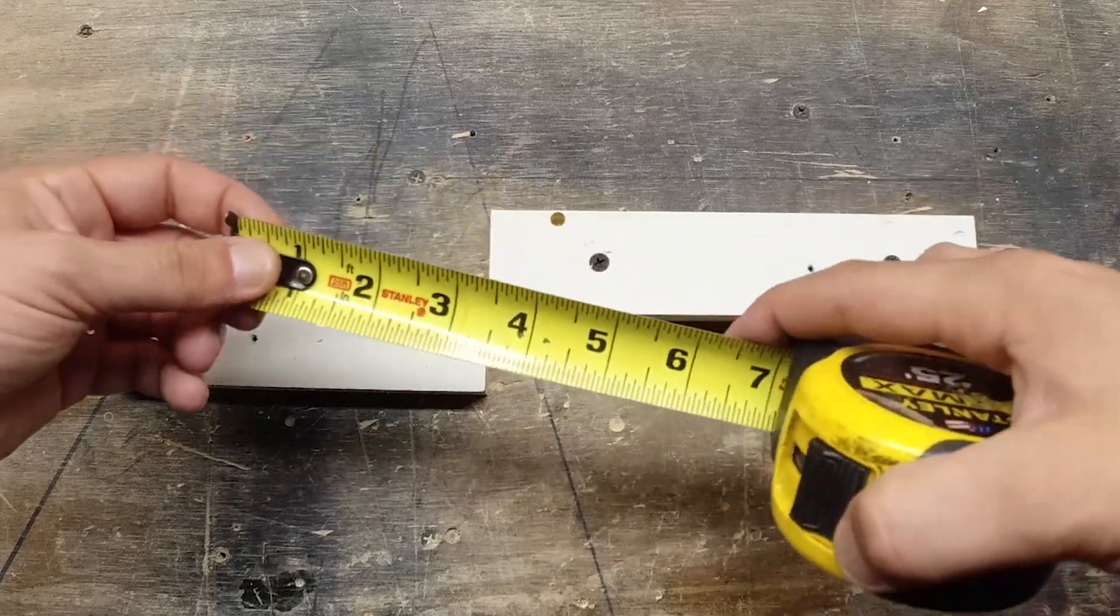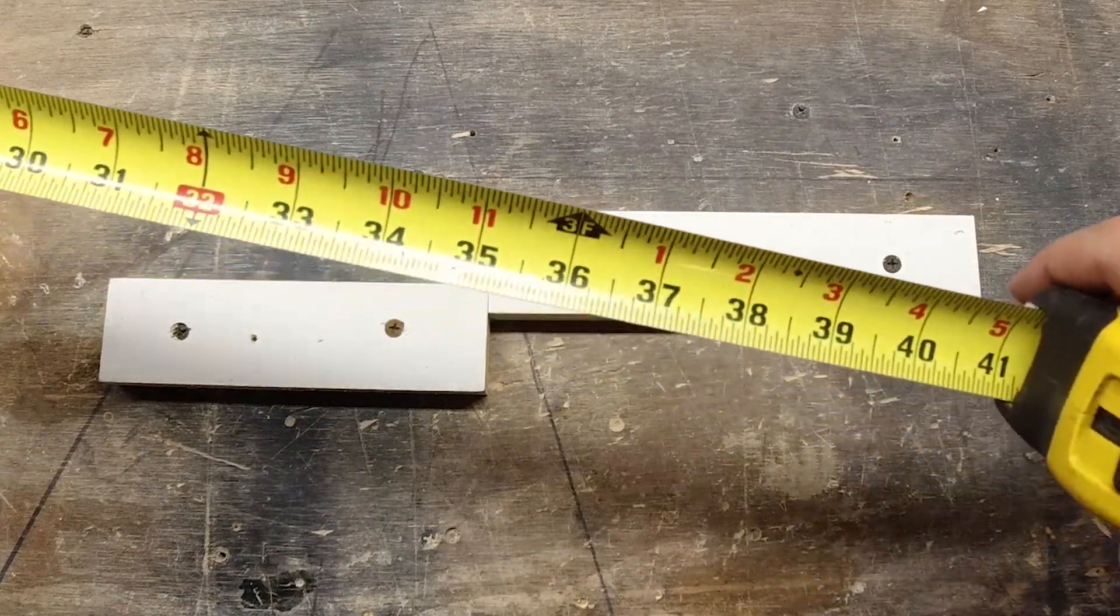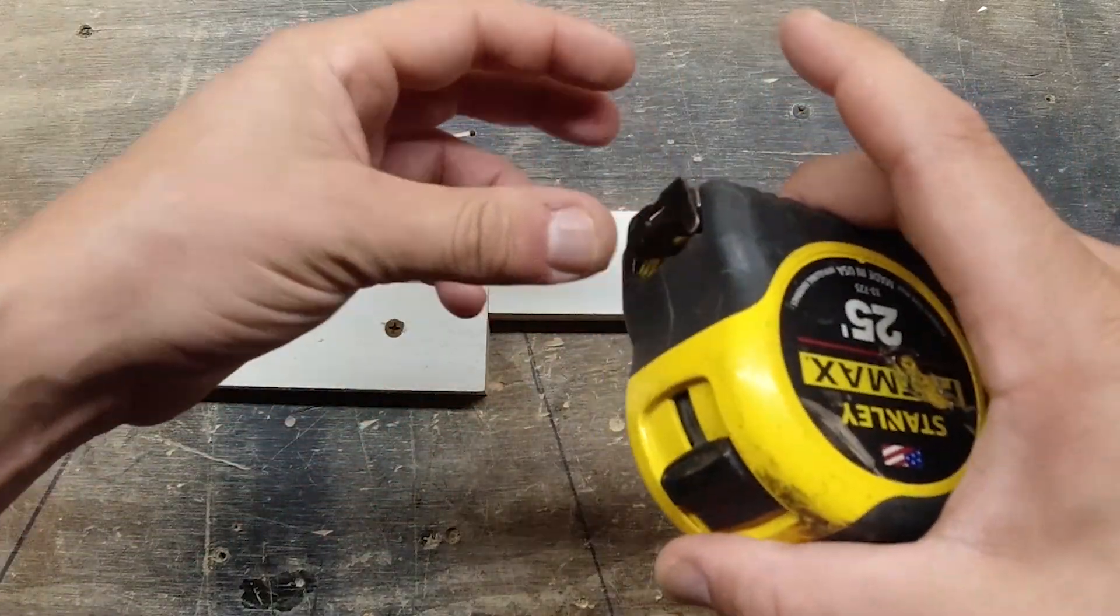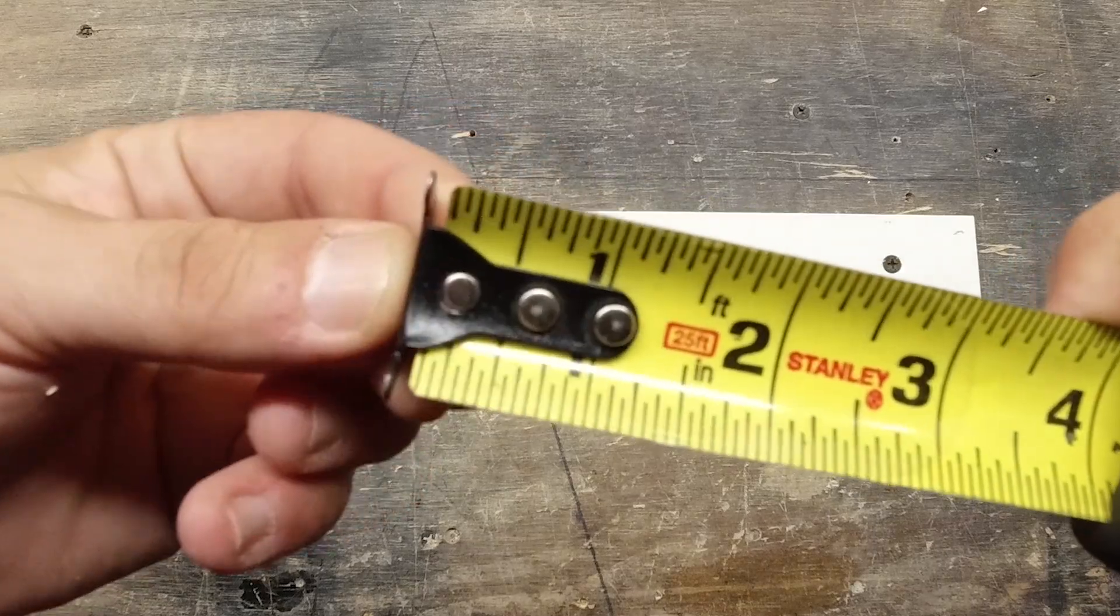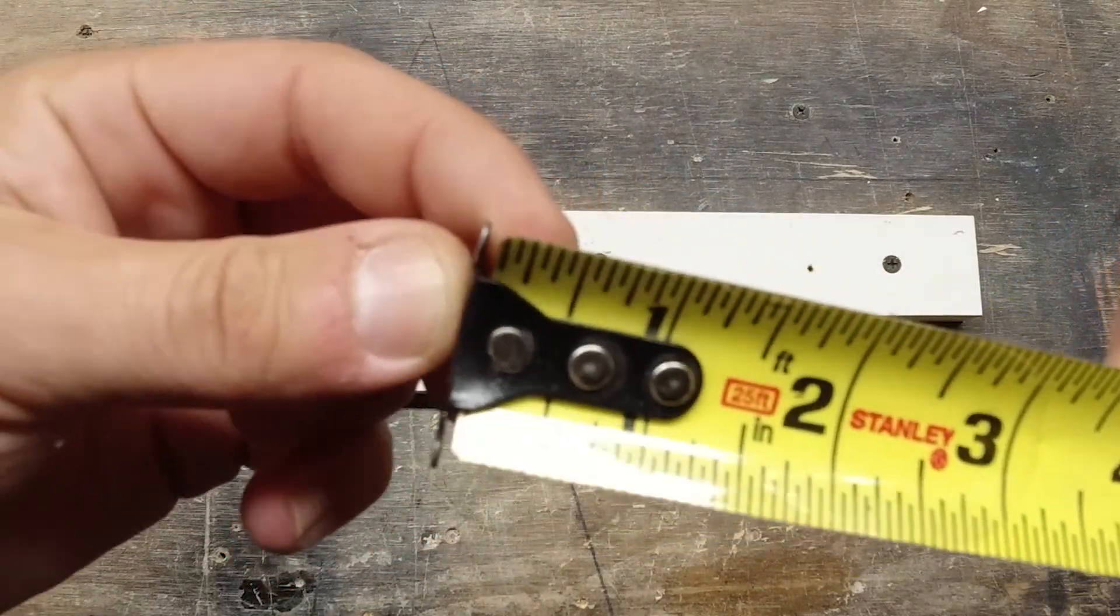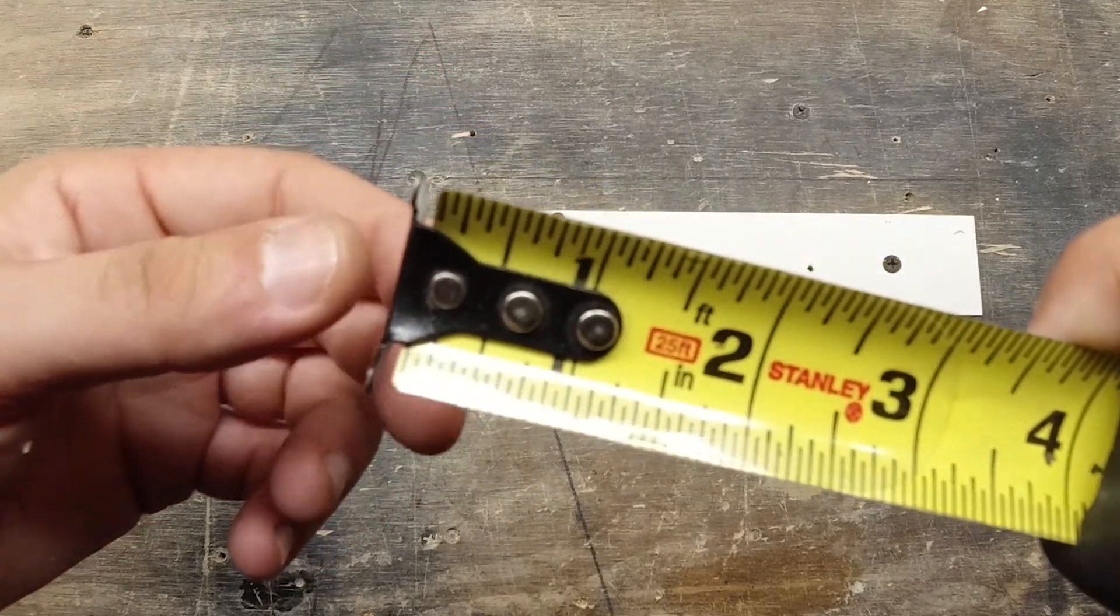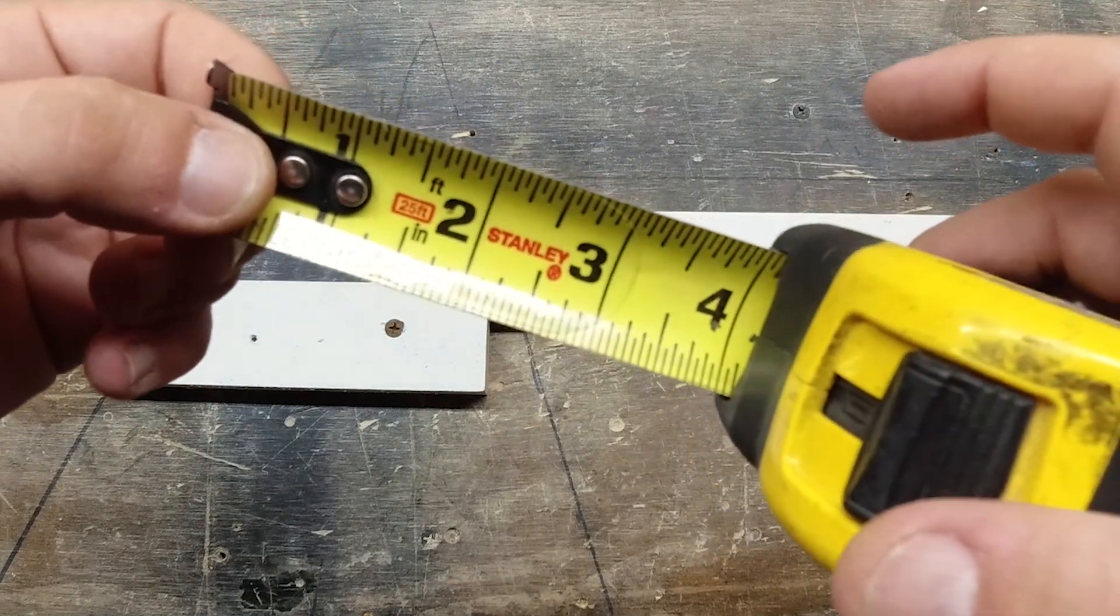And another tip for you is after you're done measuring something, say you measure something like this, don't do this. Don't let that slam into your tape because eventually these rivets are going to wear a little bit, this metal piece, the end of the tape is going to wear a little bit, and it could throw off the accuracy of your measurement. So don't slam your tape every time you're done measuring something.